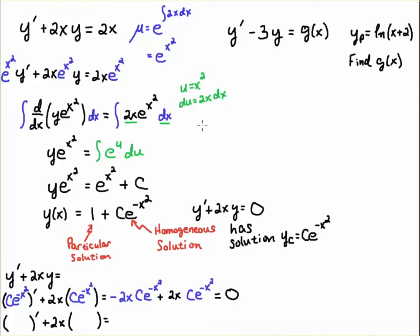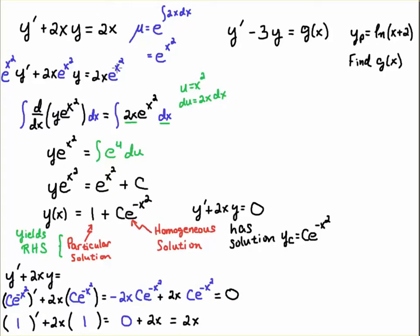In other words, if we had a homogeneous equation to begin with — if there was a 0 on the right-hand side — then we know it has the solution c·e to the minus x squared. This solution satisfies the homogeneous equation; that's why it's called the homogeneous solution. Likewise, if I plug 1 into the differential operator, the derivative of a constant is 0, and 2x times 1 is 2x — so 0 plus 2x gives us 2x, yielding the right-hand side. Plugging in the particular solution gave us the right-hand side. If we plug the entire solution into the ODE, the homogeneous term gets annihilated, and only the particular solution is left to produce the right-hand side.